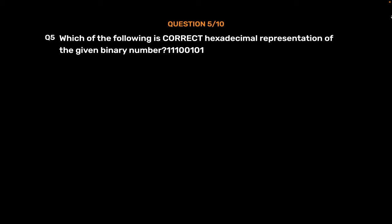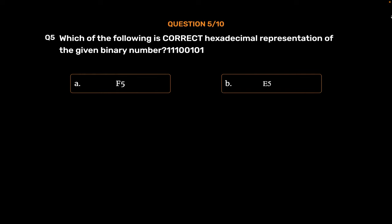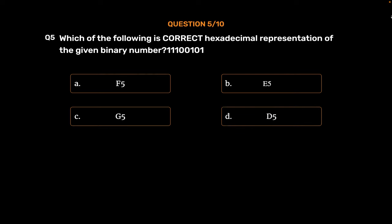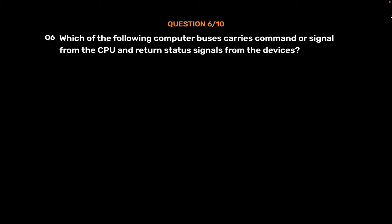Question No. 5. Which of the following is the correct hexadecimal representation of the given binary number 11100101? Option A: F5. Option B: E5. Option C: G5. Option D: D5. The correct answer is Option B: E5.